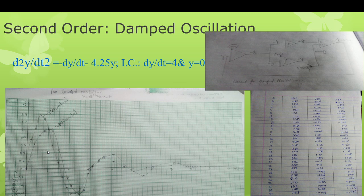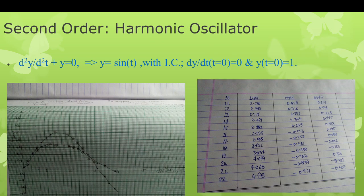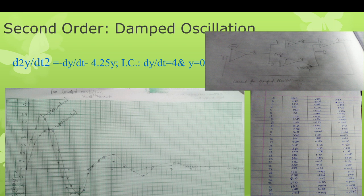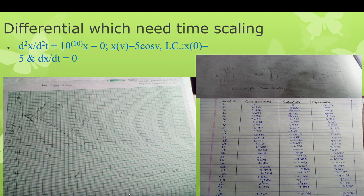Next is damped oscillations. The equation is d²y/dt² + (dy/dt) = -4.25y, with initial conditions dy/dt = 0 and y = 0. I design the circuit, get the results, and plot them on a graph. There is very small variation between the theoretical and experimental results, so this also satisfies the conditions.